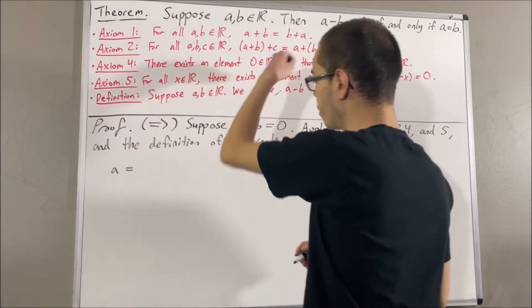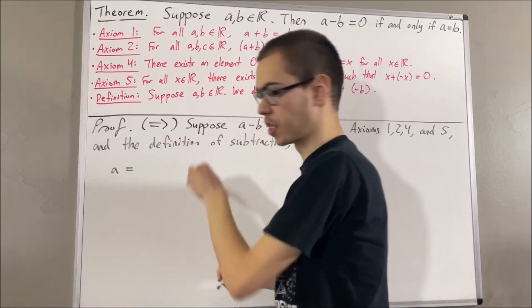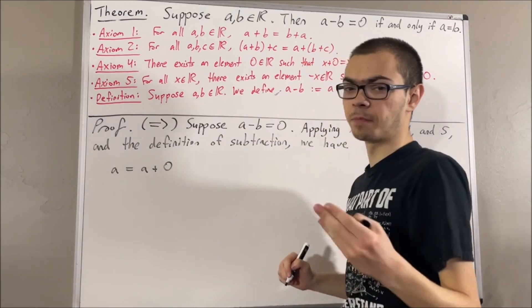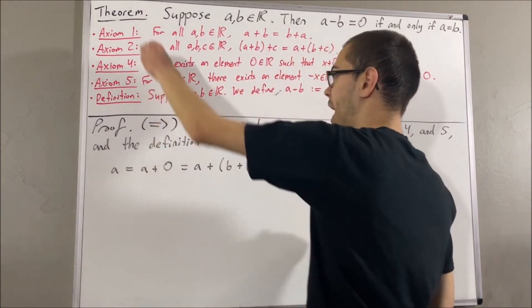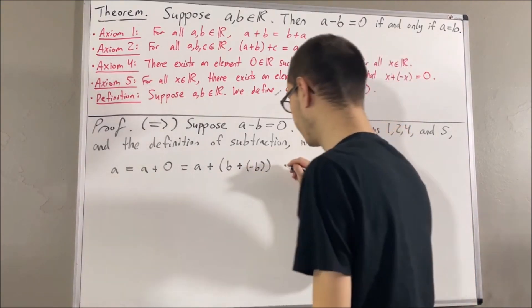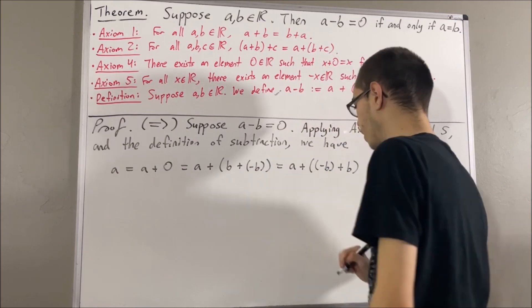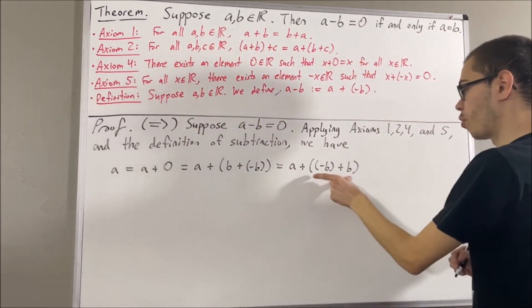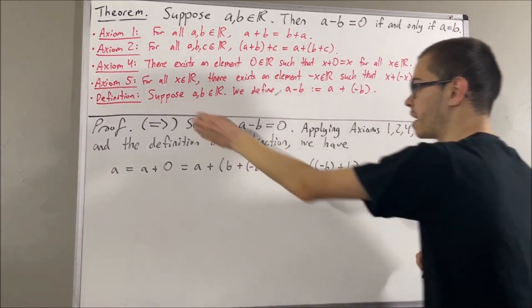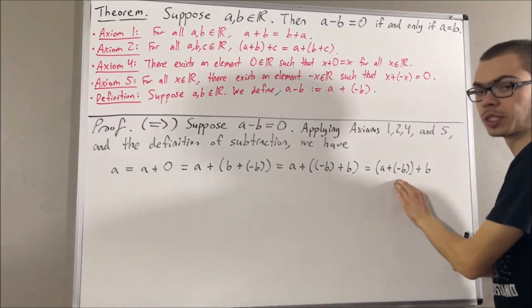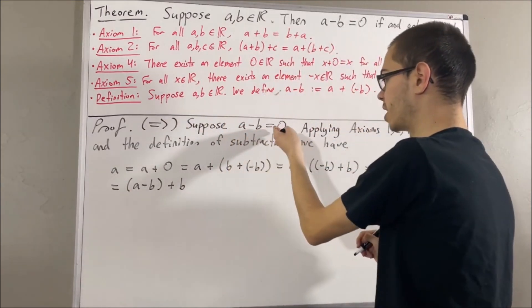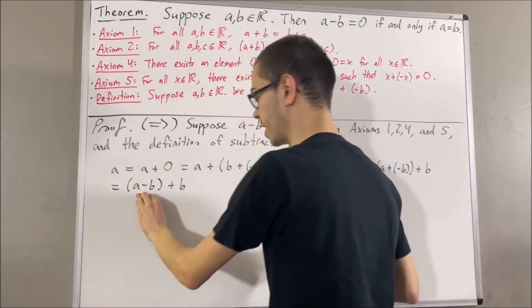First of all, by axiom 4, we know that a is equal to a plus zero. Then by axiom 5, zero is equal to b plus the negative of b. And then by axiom 1, we can replace b plus the negative of b with the negative of b plus b. And then by axiom 2, we can move the parentheses around a plus the negative of b. And then by definition of subtraction, a plus the negative of b is equal to a minus b. And then by assumption, a minus b is equal to zero, so we can replace a minus b with zero.